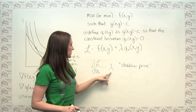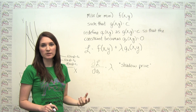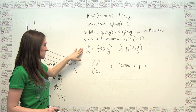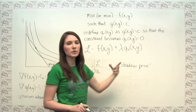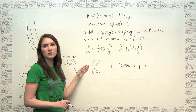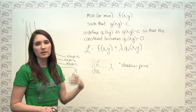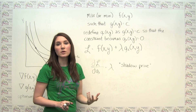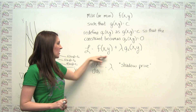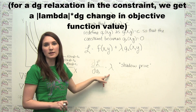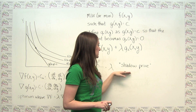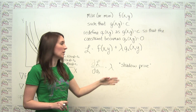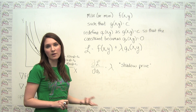In economics, the value of lambda found through the Lagrange multiplier process has a very specific interpretation. It represents the additional value in the objective function achievable by relaxing the constraint slightly — that is, how much more value in the objective function you can get from a small increase in the constraint. The technical term for this is a shadow price: for example, how much more utility you could get by increasing your income by an infinitesimally small amount.